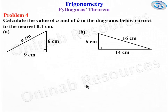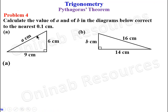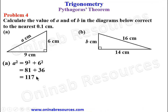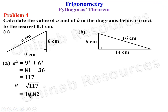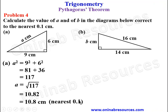We go to problem four: calculate the value of A and B in the diagrams below, correct to the nearest 0.1 centimeters. Starting from A, this is the hypotenuse, so A squared equals 9 squared plus 6 squared: 81 plus 36, giving 117. A is the square root of 117, which gives 10.82. To the nearest 0.1 centimeters, that is 10.8 centimeters.